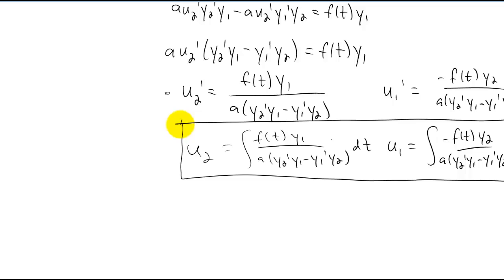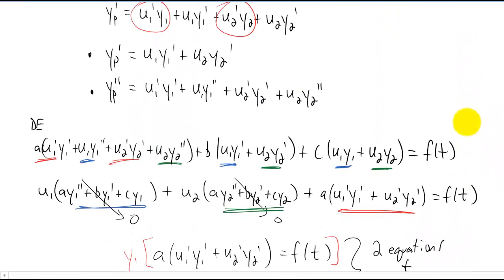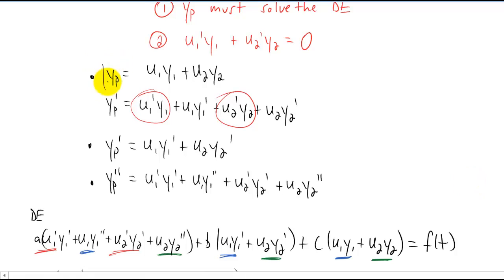You solve the homogeneous part of your DE for y1 and y2. You plug all the stuff in here and you figure out what u1 and u2 is just by integrating. Once you have u1 and u2, you just plug u1 and u2 into your particular solution guess right here and you're done. You have a particular solution.